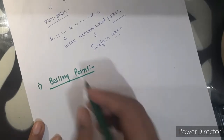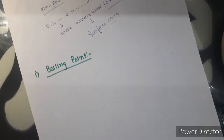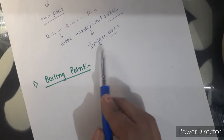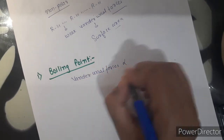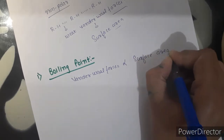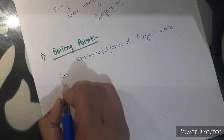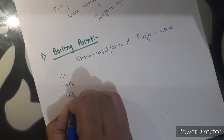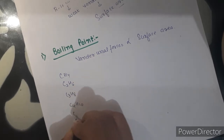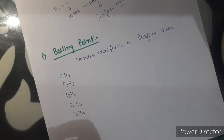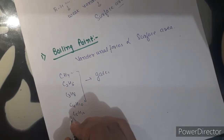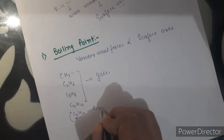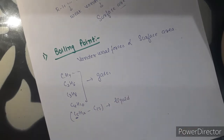First property is boiling point. All alkanes are joined together by weak van der Waals forces of interaction, and these forces depend upon surface area. Alkanes with fewer carbon atoms have less surface area, so they have less forces of interaction. The alkanes up to four carbon atoms are typically gases by nature, and alkanes from carbon 5 to carbon 17 are liquids.